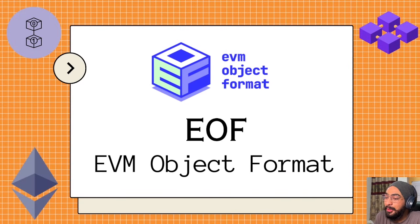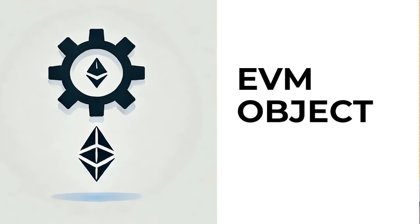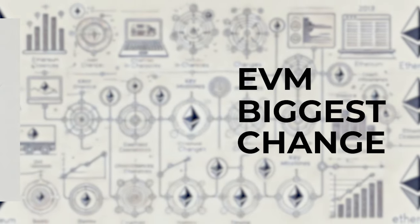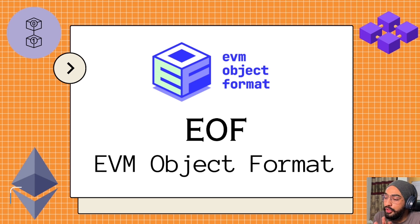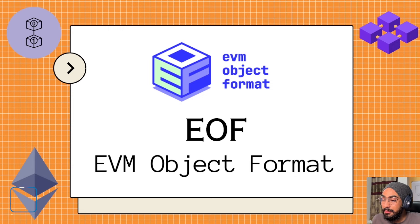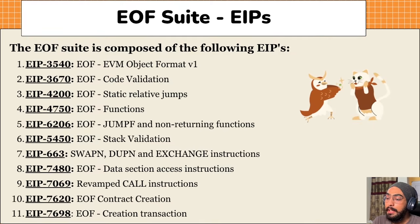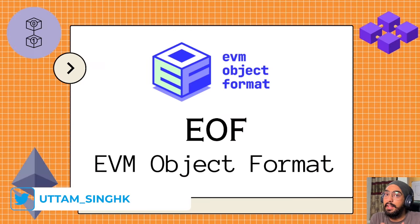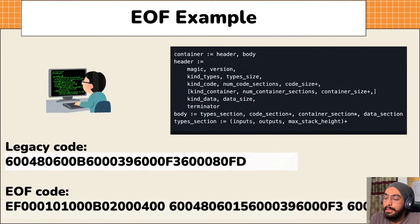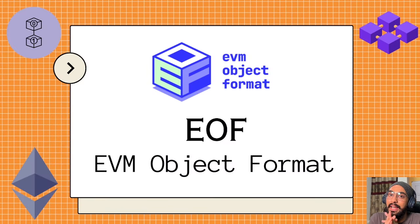GM everyone. In this video I'm going to discuss a very important upgrade to the EVM which is EVM Object Format, or EOF. This is going to be the EVM's biggest change since genesis and I am really excited about it. I highly recommend you watch this video till the end, especially if you are a builder or involved in the EVM ecosystem. We are going to discuss EOF, which basically consists of a series of EIPs, how these EIPs directly benefit the EVM, the current execution specification, an example of EOF bytecode, and even some complexity and disadvantages.